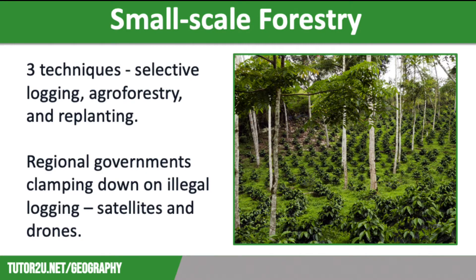Selective logging involves only felling trees that are fully grown. These are seen as less valuable ecologically, meaning younger trees can be allowed to mature and continue to provide protection from soil erosion by binding the soil together with roots and providing leaf litter to help with nutrient cycling. The selective logging cycle lasts between 30 and 40 years, meaning that trees cannot be felled until they are at least 30 years old.